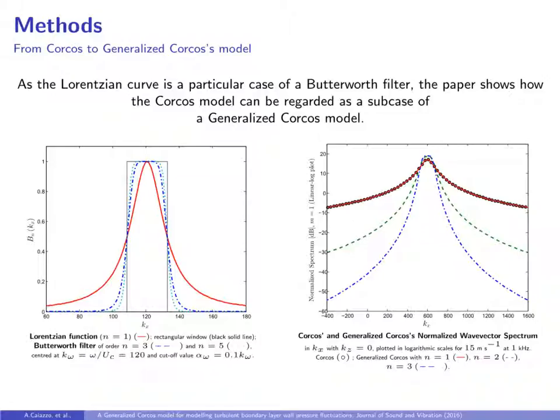In this way, by changing the order of the filter n along the streamwise direction and m along the spanwise one, it's possible to control the decay of the TBL model and make it steeper if necessary. As seen in the picture on the right-hand side, which shows how, for filter of order equal to 1, the generalized Corcos spectrum is coincident with that of Corcos, and increasing the order n, the curve shows the same behavior seen in the picture on the left-hand side, where the Butterworth filter with center kω and cut-off value αω is shown for different n.